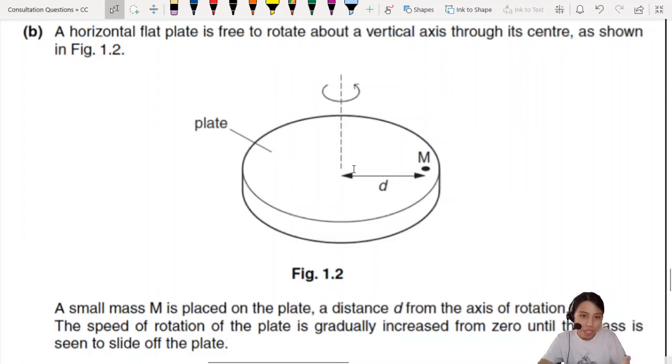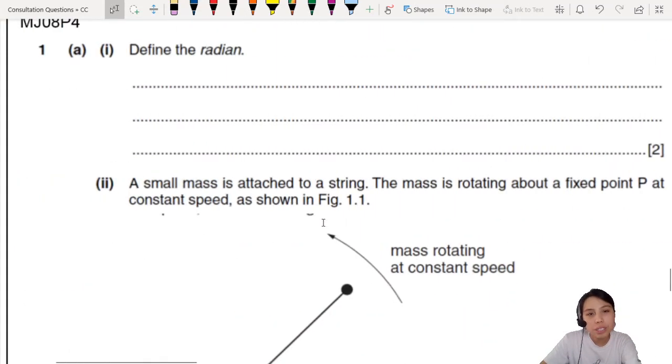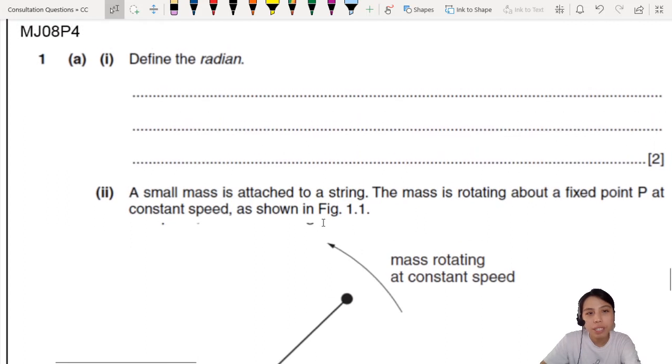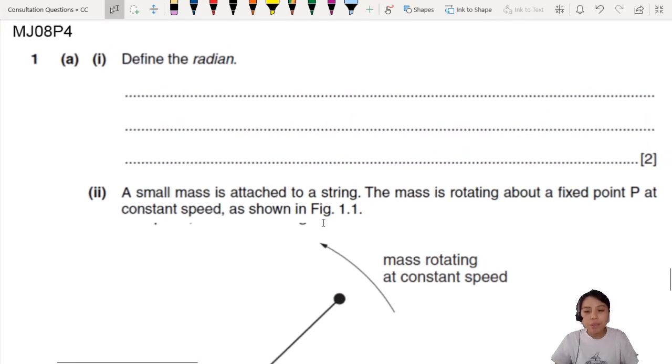This is a famous smart question, very tricky. But before that, let's start with the basics of circular motion. The first thing is define the radian. What is a radian?